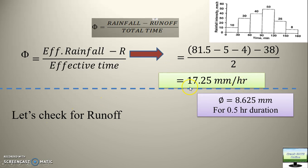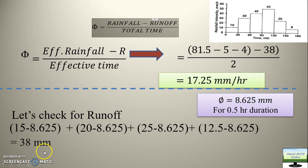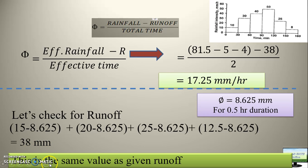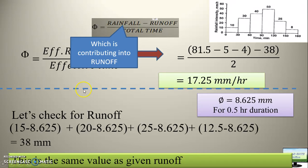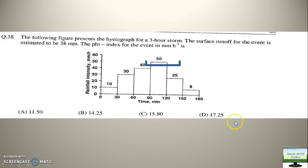Now we will check for runoff. If 17.25 mm per hour is the phi index, then what will be the value of phi for half an hour? 17.25 divided by 2. Now calculate the runoff the same way — 15 minus this value. The value of runoff is 38 mm. Is this the value given in the question? Yes — this is the same value as given in the question. So what you have to remember: phi index equals effective rainfall minus runoff divided by effective time. The answer for this question is 17.25 mm per hour.